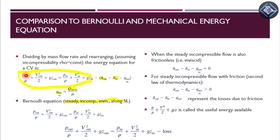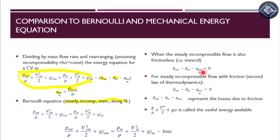The outlet and inlet could lie along a streamline, but the only assumption that differs between the energy equation and the Bernoulli equation is the frictionless or inviscid assumption. If we assume the flow to be frictionless for this equation, then the quantity in brackets — ũ-out minus ũ-in, which is internal energy out minus internal energy in, minus the rate of heat transfer into the system per unit mass — should equal zero.